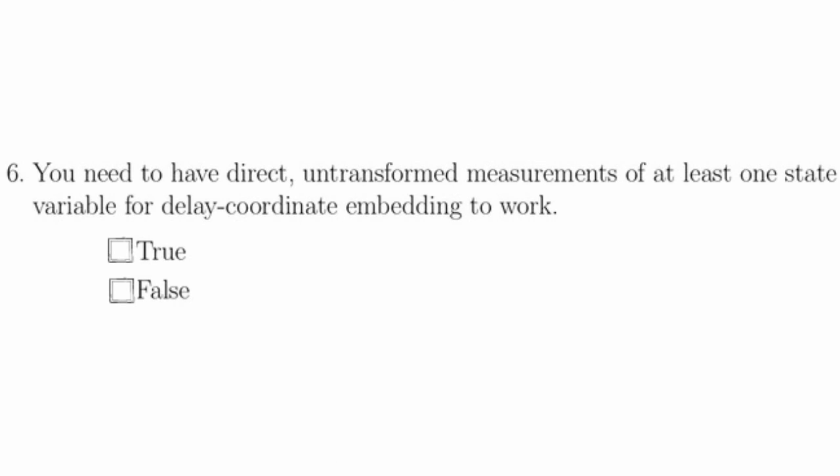Question 6 states that you need to have direct, untransformed measurements of at least one state variable for delay-coordinate embedding to work, and this is false. You only need to measure a smooth generic transformation of at least one state variable for delay-coordinate embedding to work. Recall the examples in the lecture from 8.2, where you actually measured x times y minus z in the Lorenz equation. This is definitely a transformed measurement of all state variables, and that worked just fine.